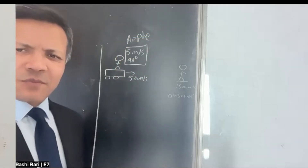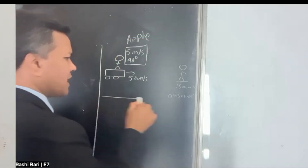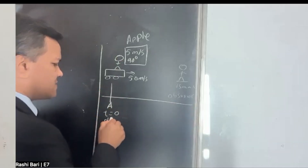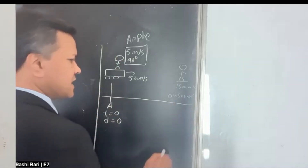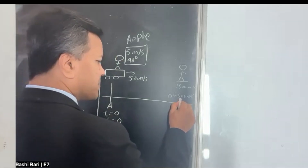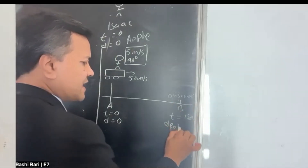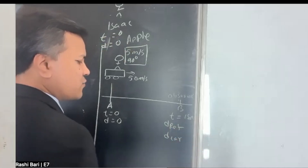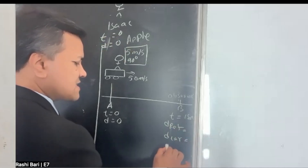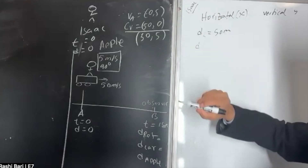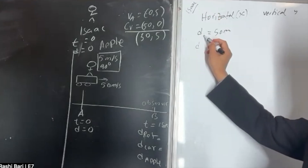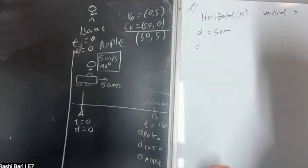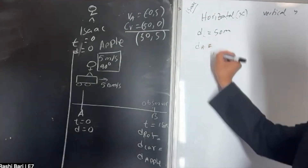The first question: this is location A. At location A, time is zero and distance is zero. Can you tell me at location B — the distance of ref at the end of one second, what is the distance of the car at the end of one second, and what is the distance of the apple at the end of one second? For Isaac's reference frame, what is the ref displacement at the end of one second? 50.